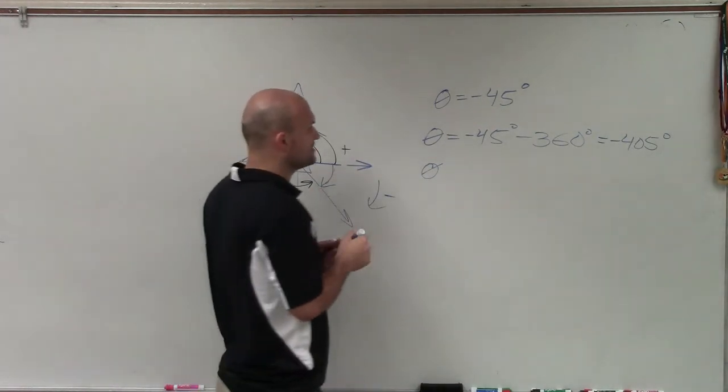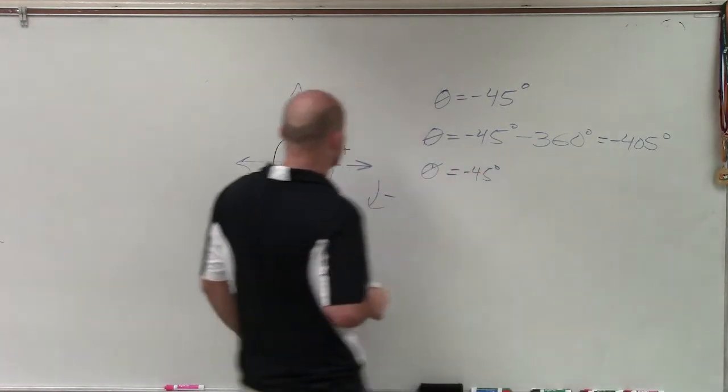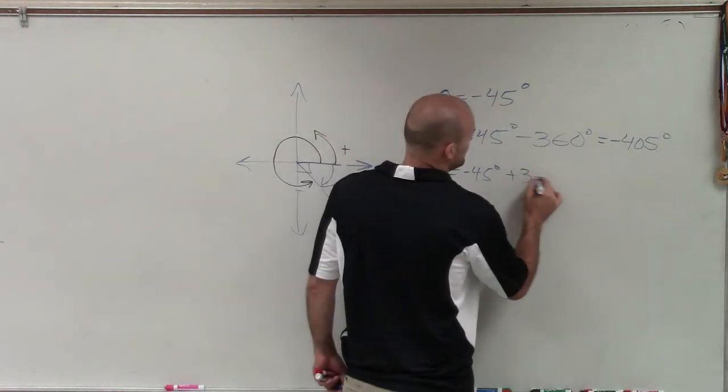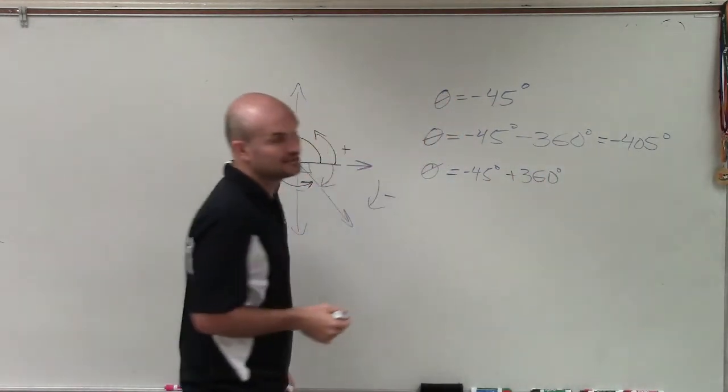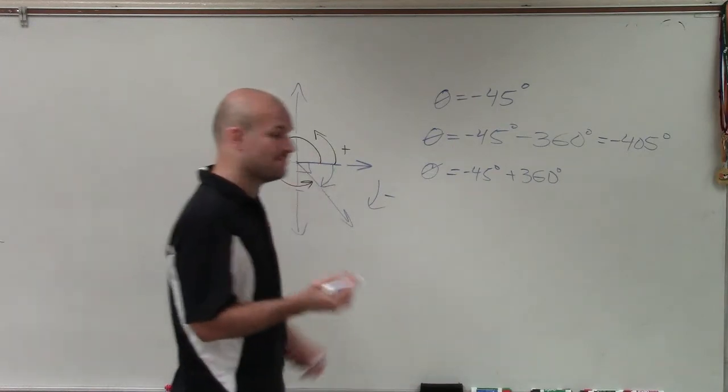So to find that, all I need to do is take my negative angle, and I just need to add 360 degrees, one revolution. And that's going to give me what this angle is in the black, which is going to be positive.